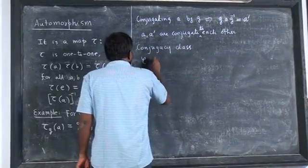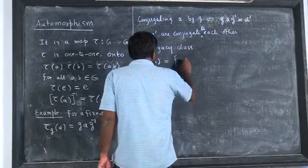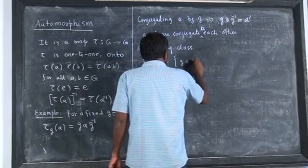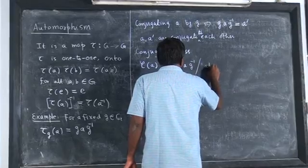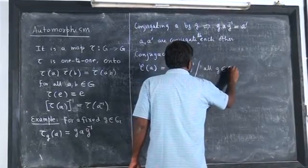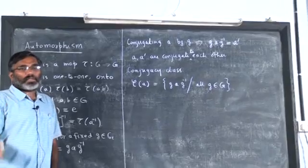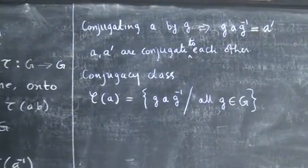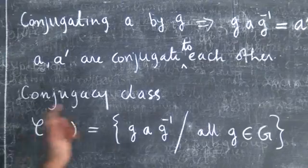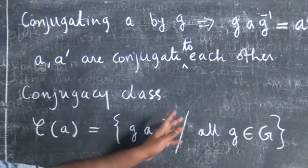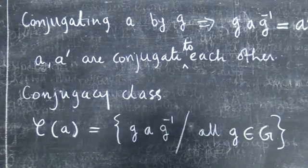Let me call it C. A conjugacy class is the set of all elements g·a·g⁻¹ for all g in G. When you try this with all g in G you may get some repetitions; omit those repetitions. The resulting set — the first element may be a-prime, the second a-double-prime, and so on — all of them together form the conjugacy class of a.